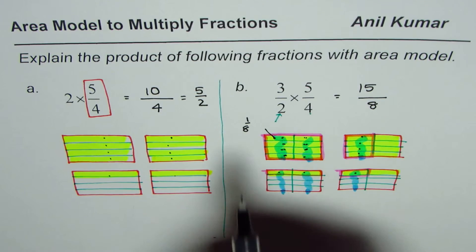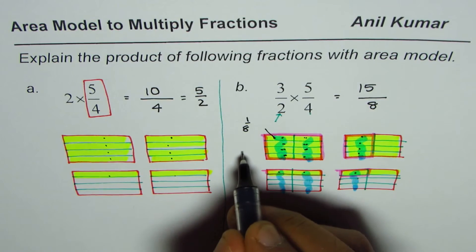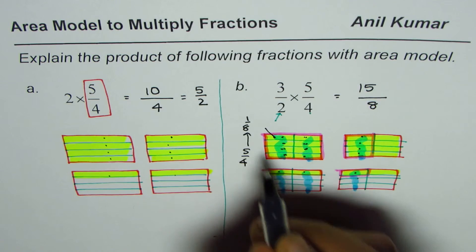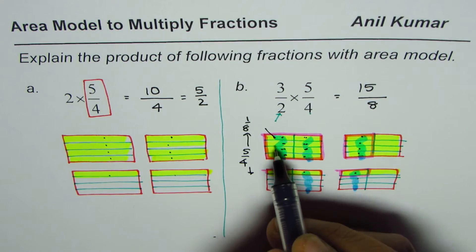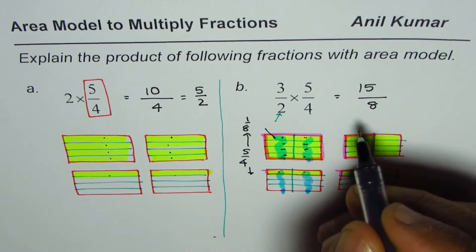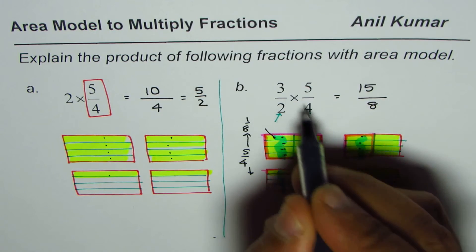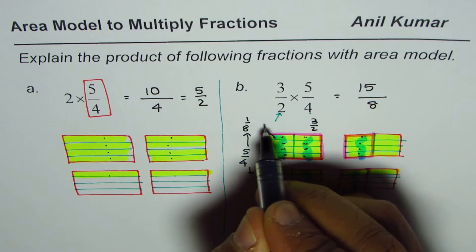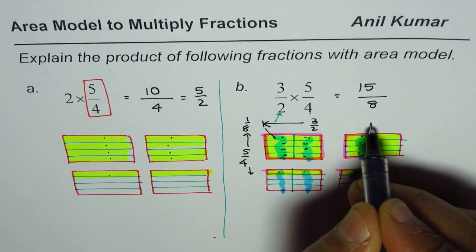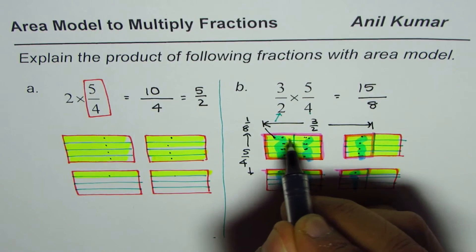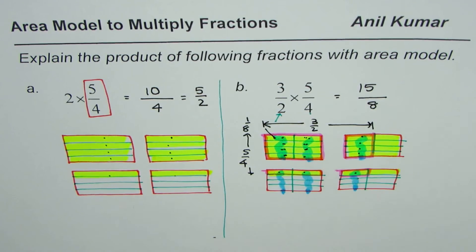And I hope that helps you to understand how to do such questions. Here you will see that we have rows 5 out of 4 selected. As far as columns are concerned, 3 out of 2 have been selected. These are 1, 2, and 3. And each rectangle is divided into 2 parts.